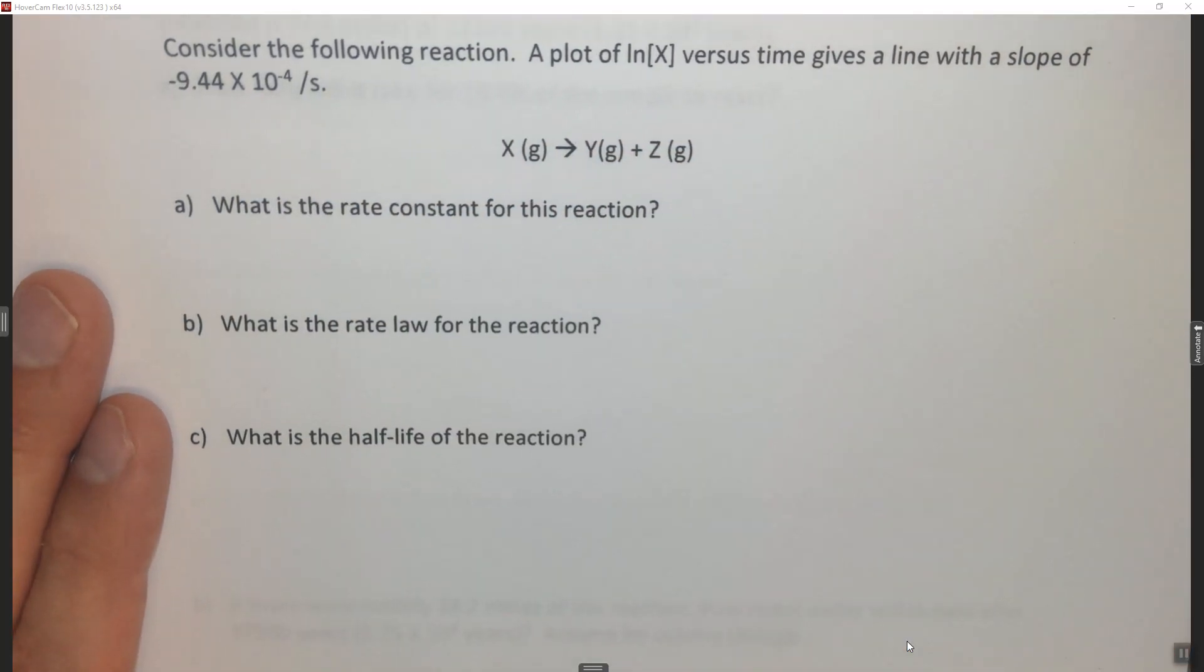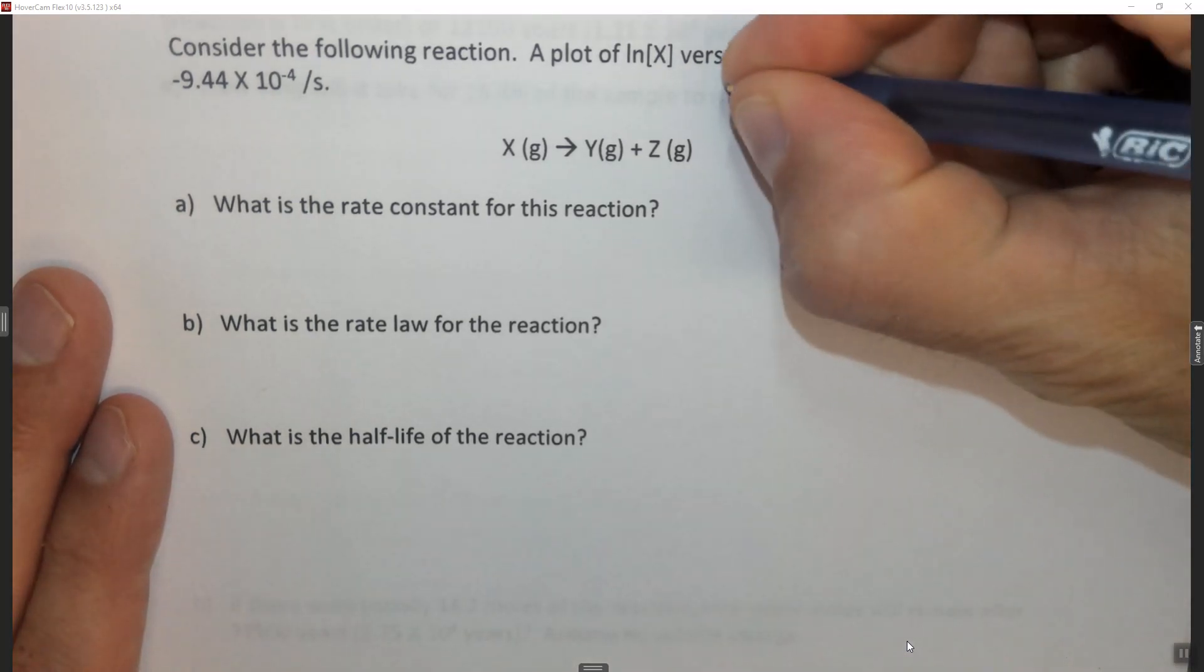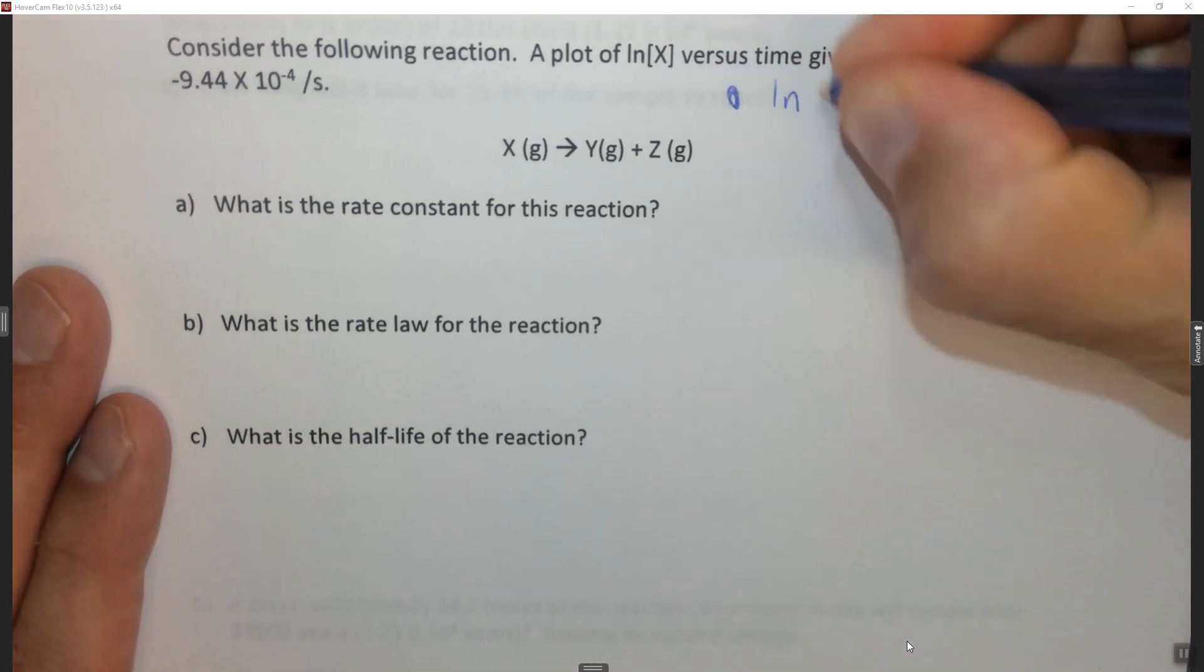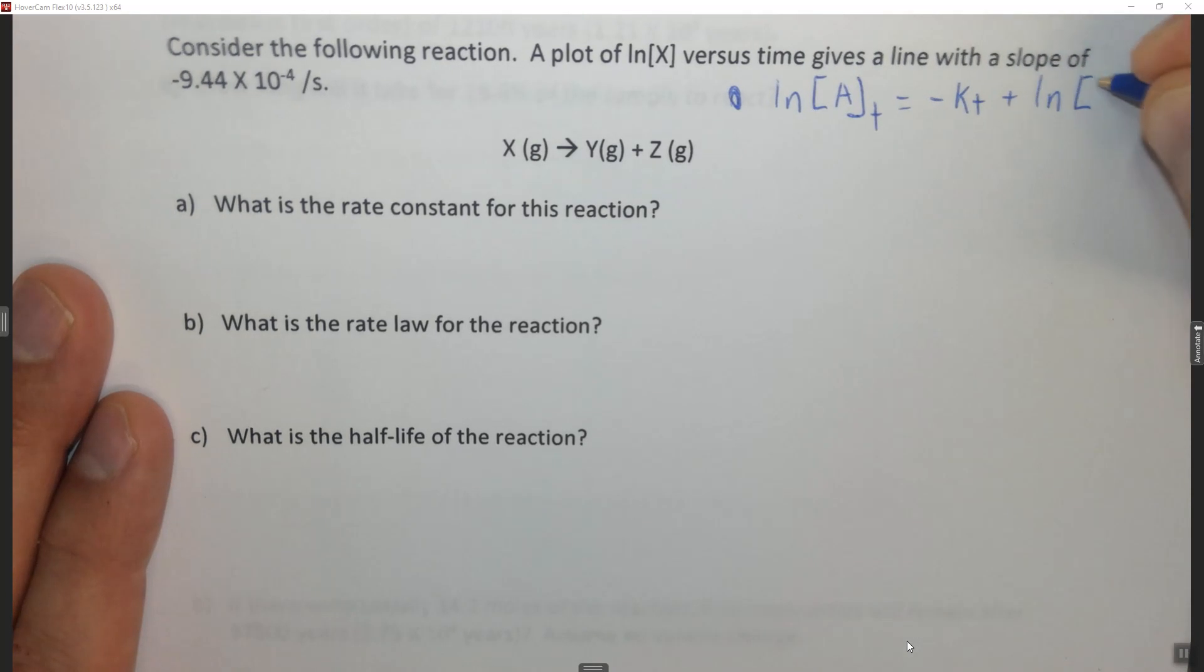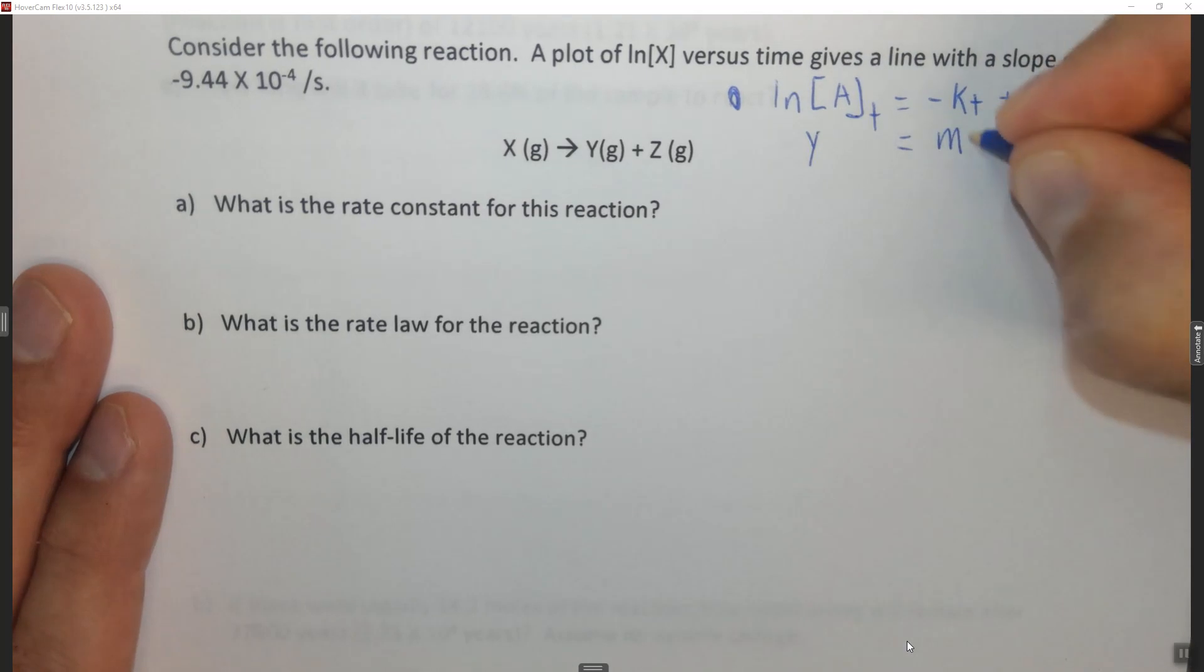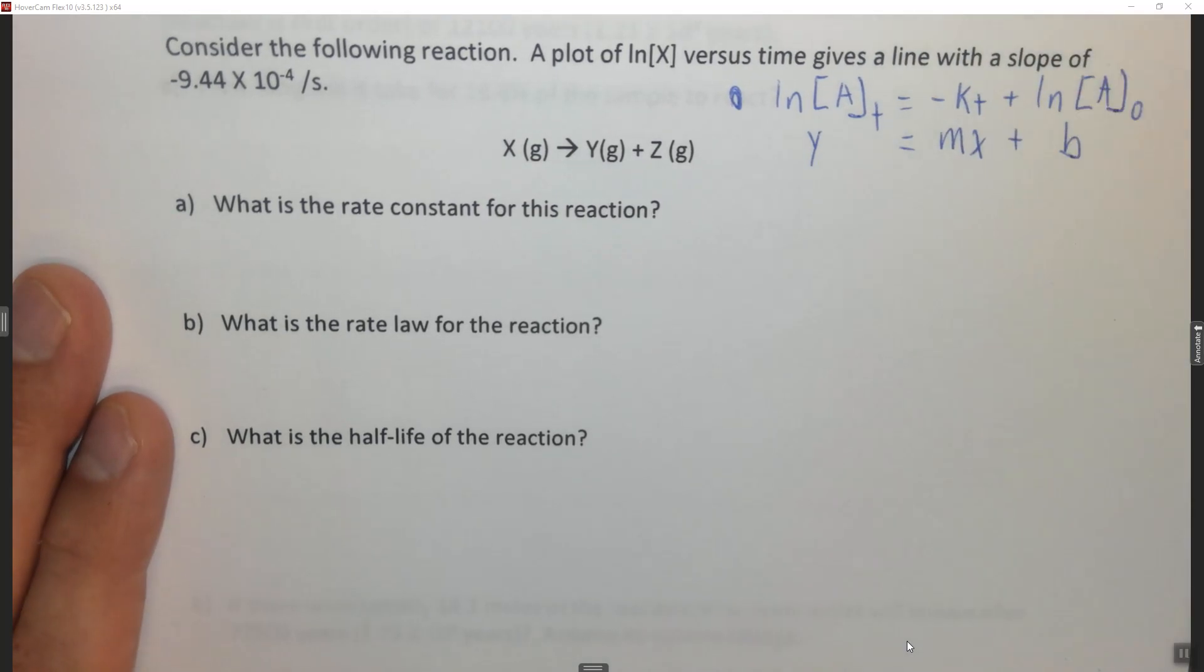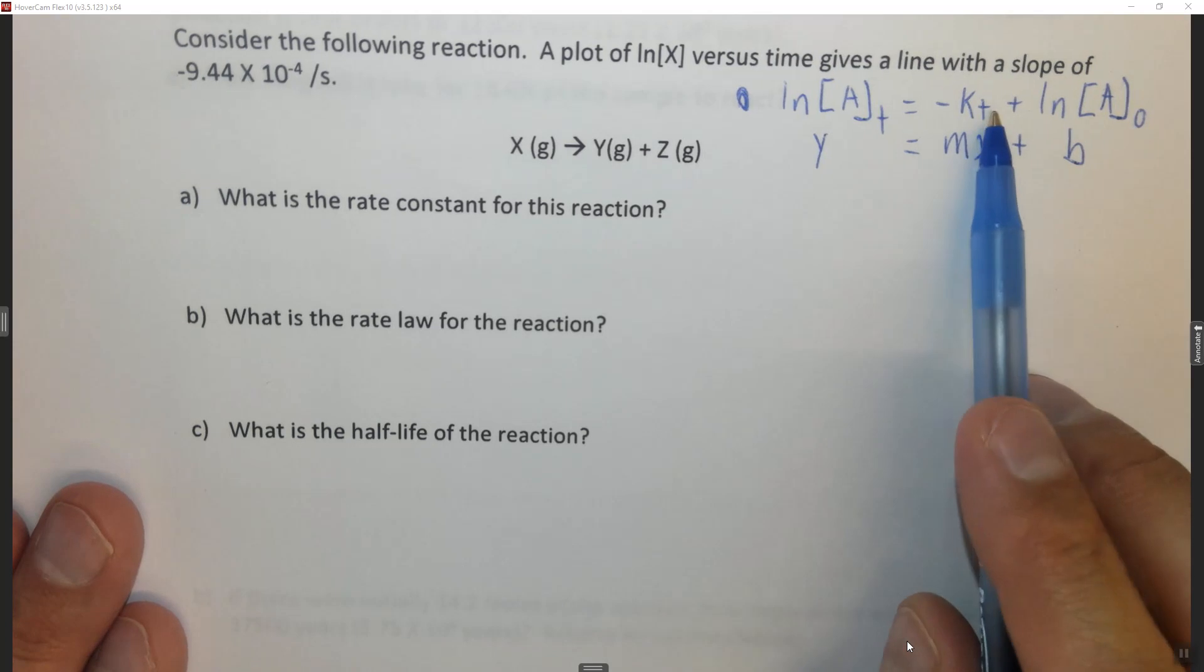So when we look at this graph, if we graph the integrated first-order rate law, ln of concentration of A at some time equals negative kt plus the ln of the concentration of A initially, and we look at this as y equals mx plus B, what we find is that the slope of the line is time.